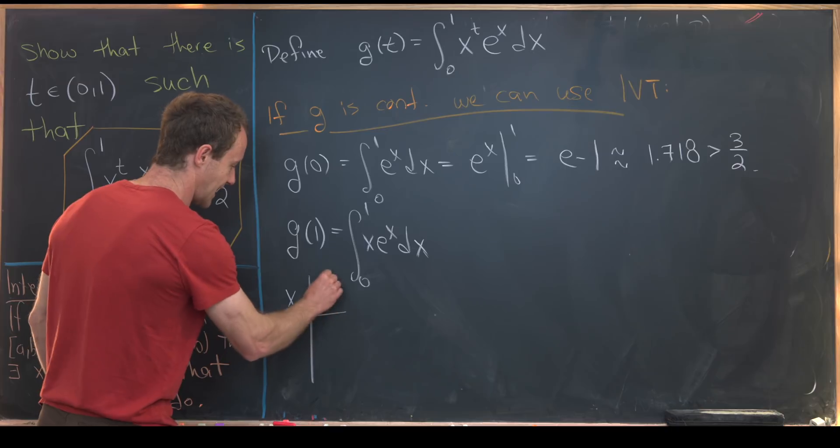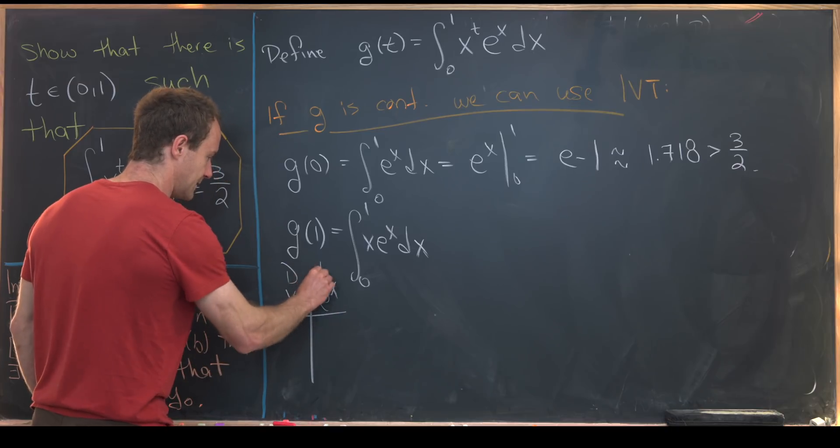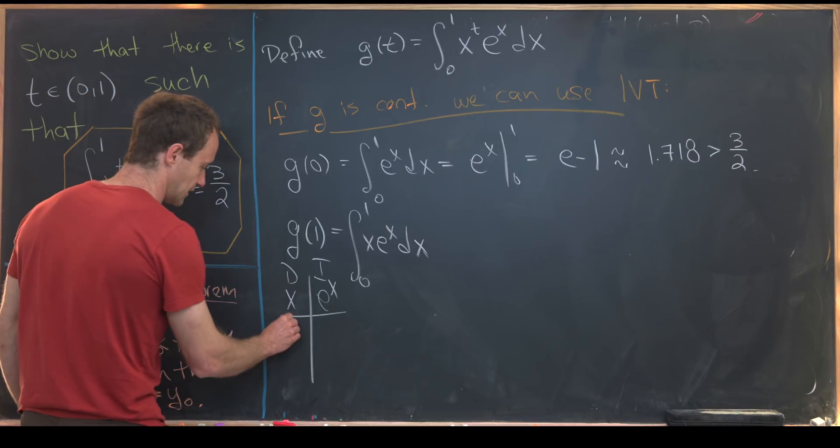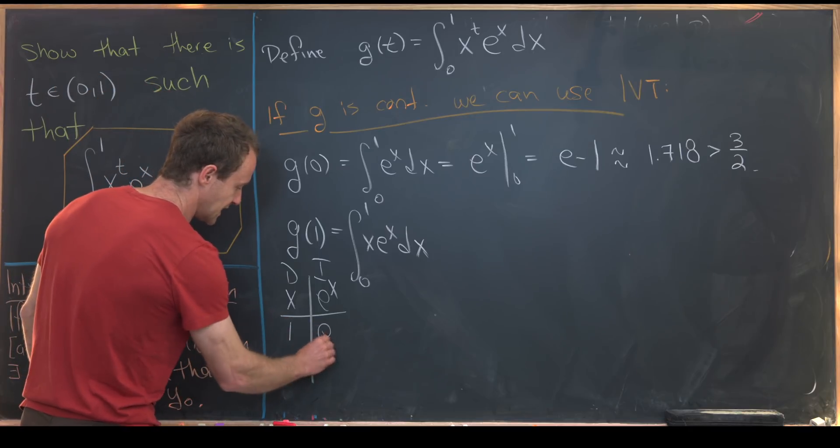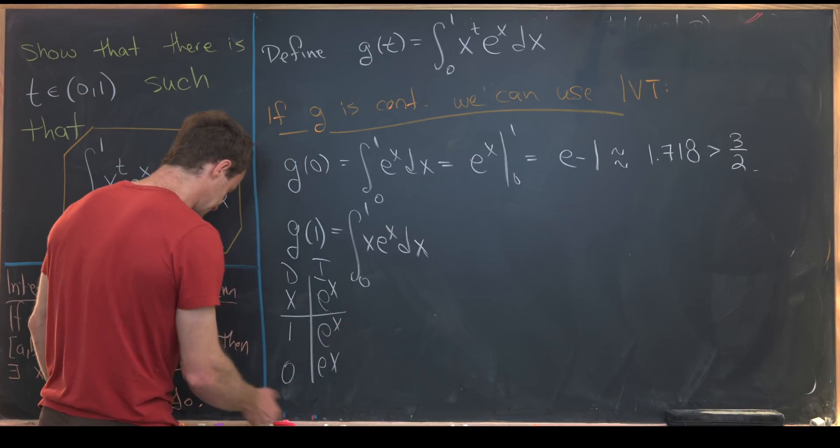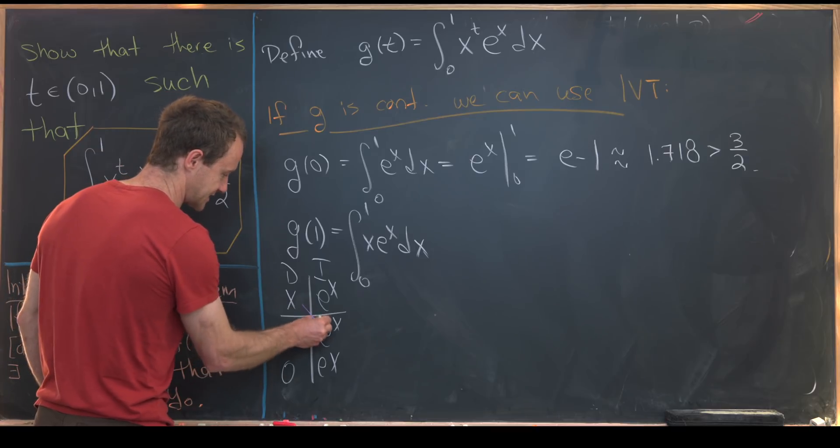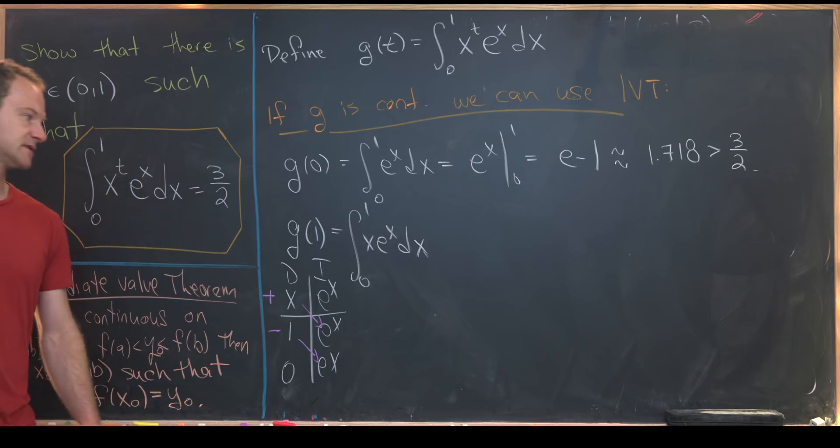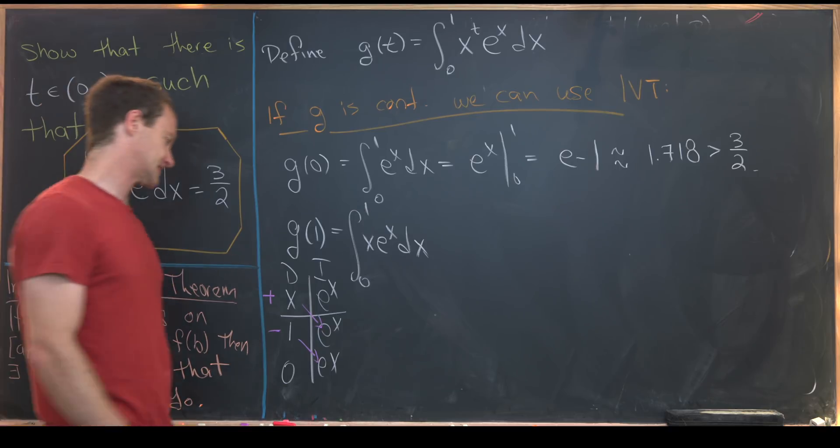So we'll have x here, e to the x here. We'll take derivatives down this column, integrals down that column. So that'll leave this with one, zero, e to the x, e to the x, and then we'll match it up like this on the diagonal, giving this a plus and this a minus.